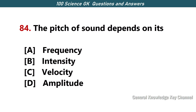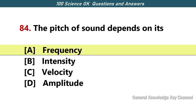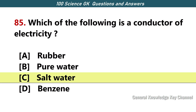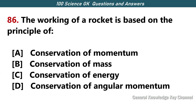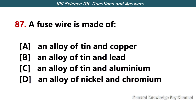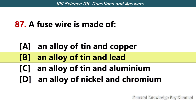The pitch of sound depends on its — Answer A — frequency. Which of the following is a conductor of electricity? Answer C — salt water. The working of a rocket is based on the principle of — Answer A — conservation of momentum. A fuse wire is made of — Answer B — an alloy of tin and lead.